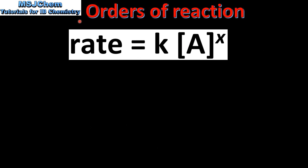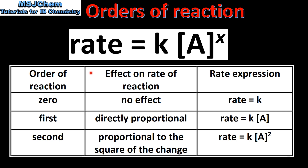Next we look at orders of reaction. The order of reaction with respect to a particular reactant is the power to which the concentration of the reactant is raised in the rate expression. In this table we can see the effect on the rate of reaction for a reaction that is zero order, first order, and second order with respect to a particular reactant. If a reaction is zero order with respect to a particular reactant, then changing the concentration of the reactant will have no effect on the rate of reaction.